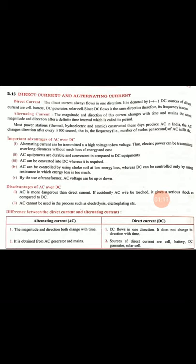Direct current is powered by a battery, but alternative current is mostly generated by a power plant. This can be a thermal power plant, a hydroelectric power plant, or an atomic power plant. The alternative current we use in our houses — for tube lights, fans, and TVs — all comes from such power plants.